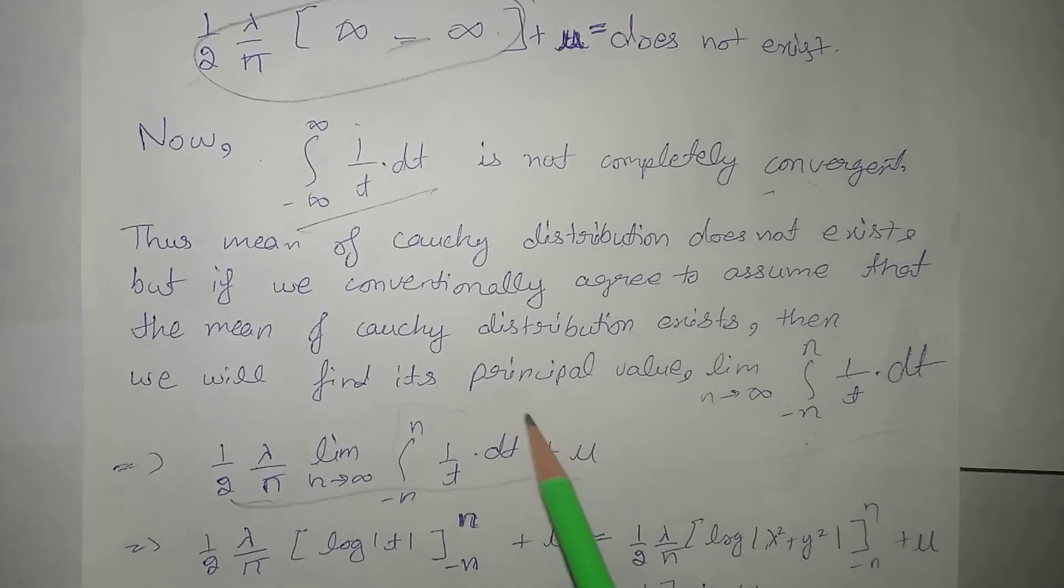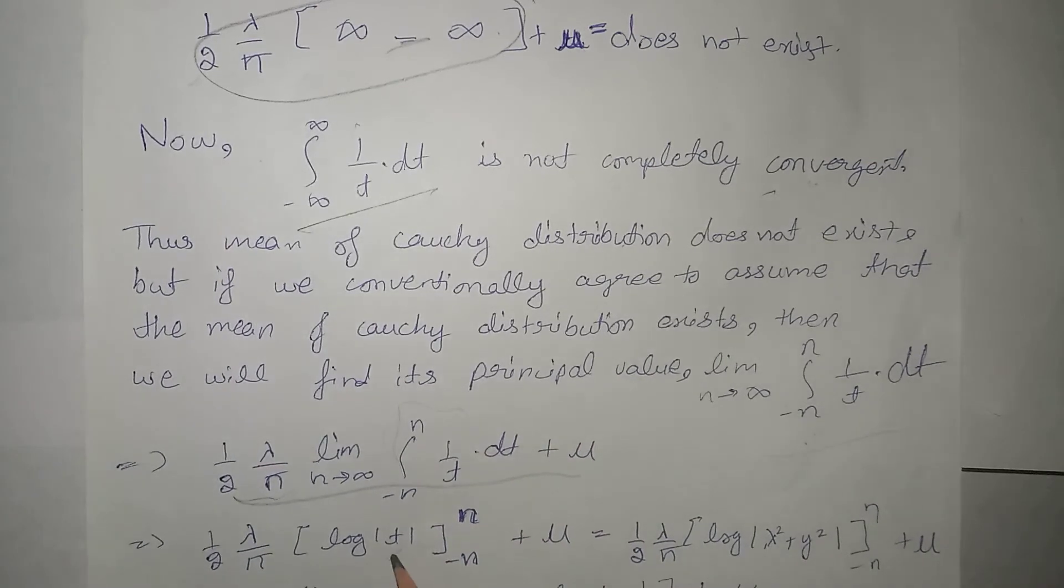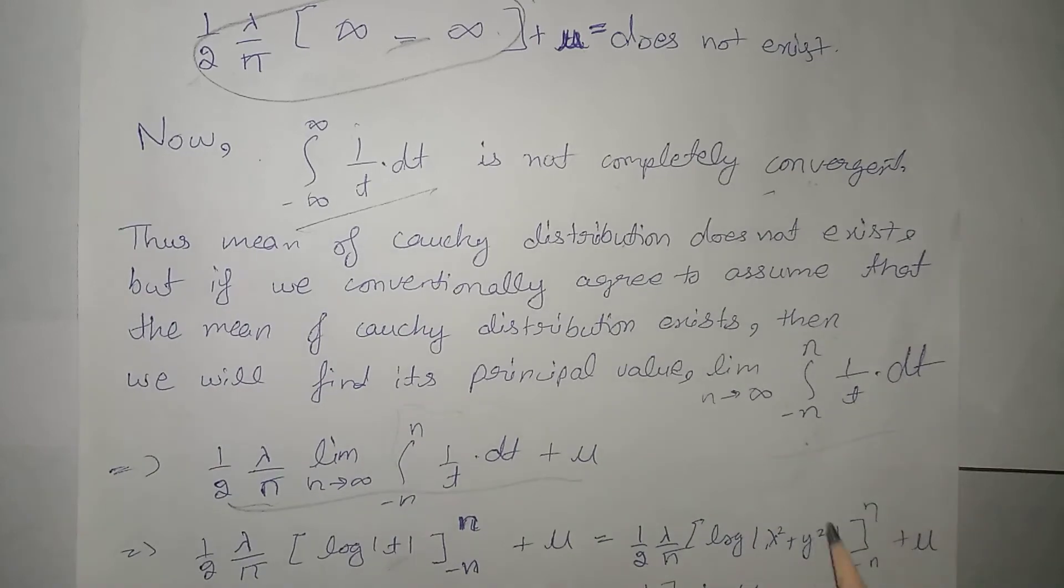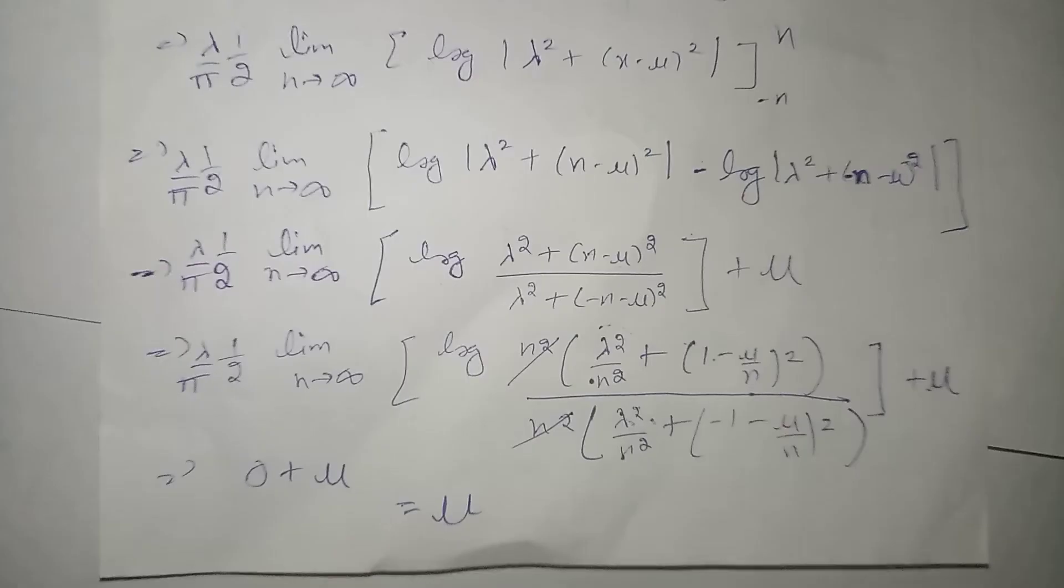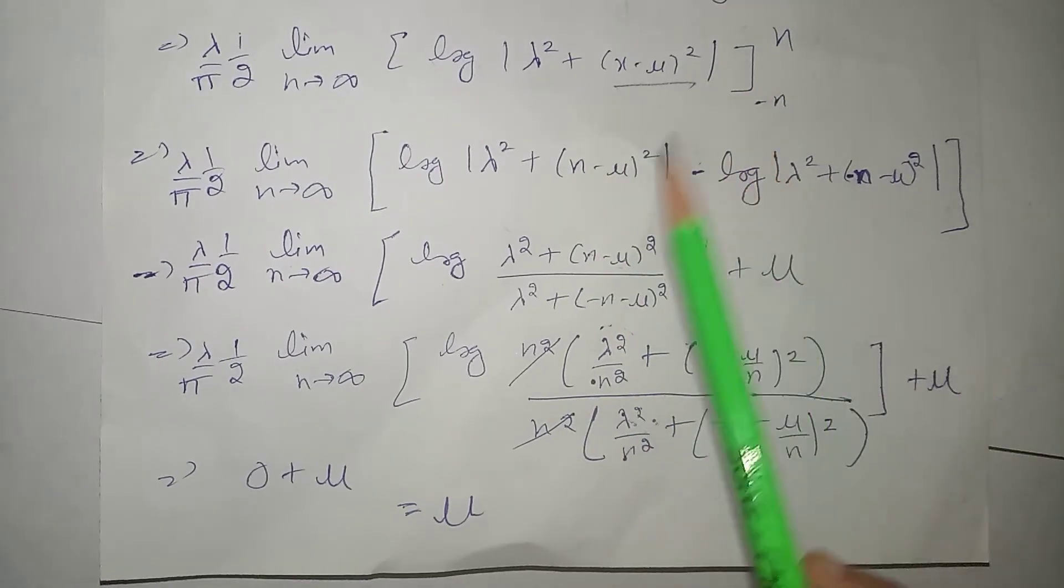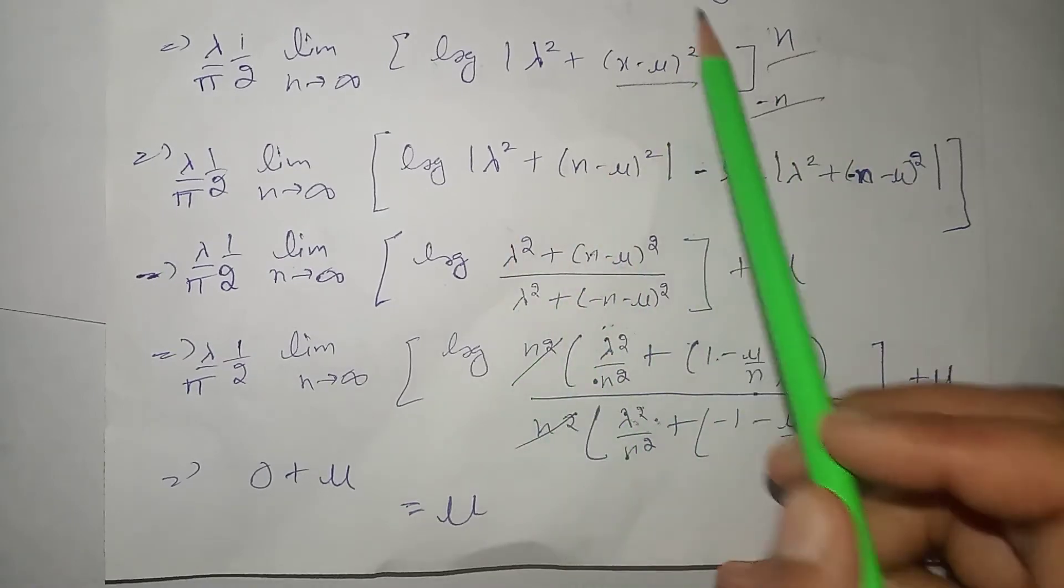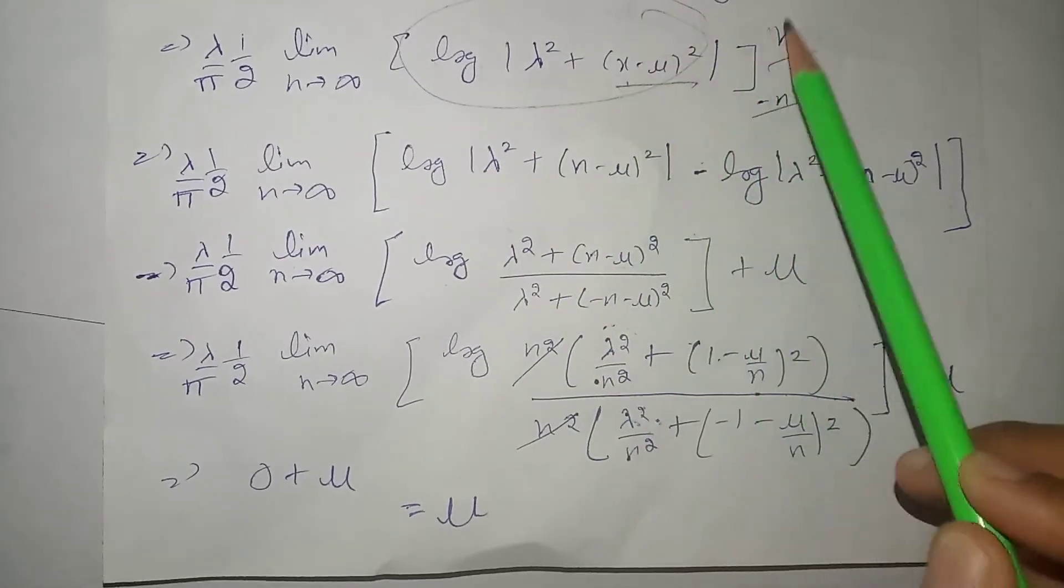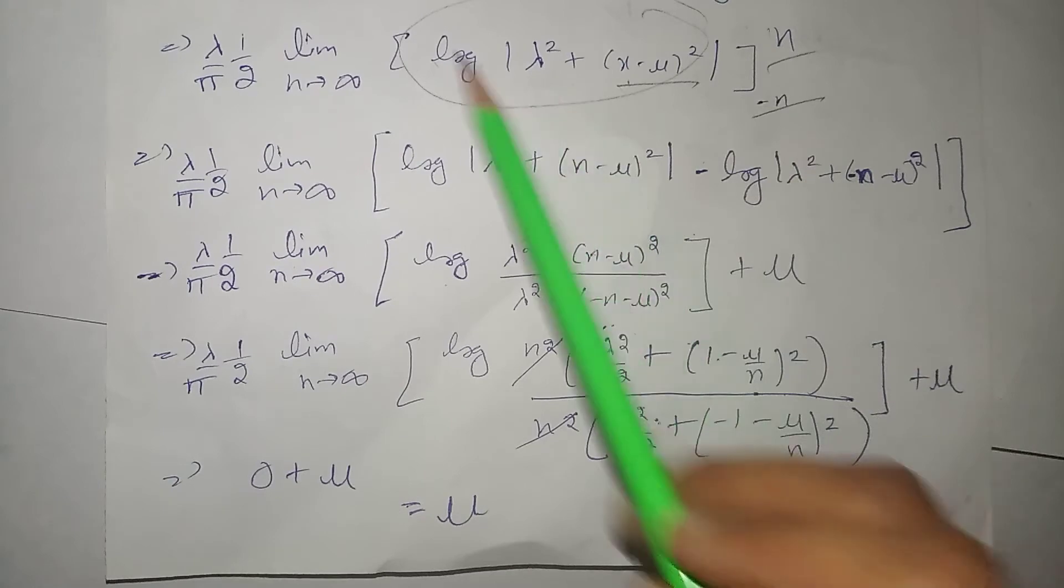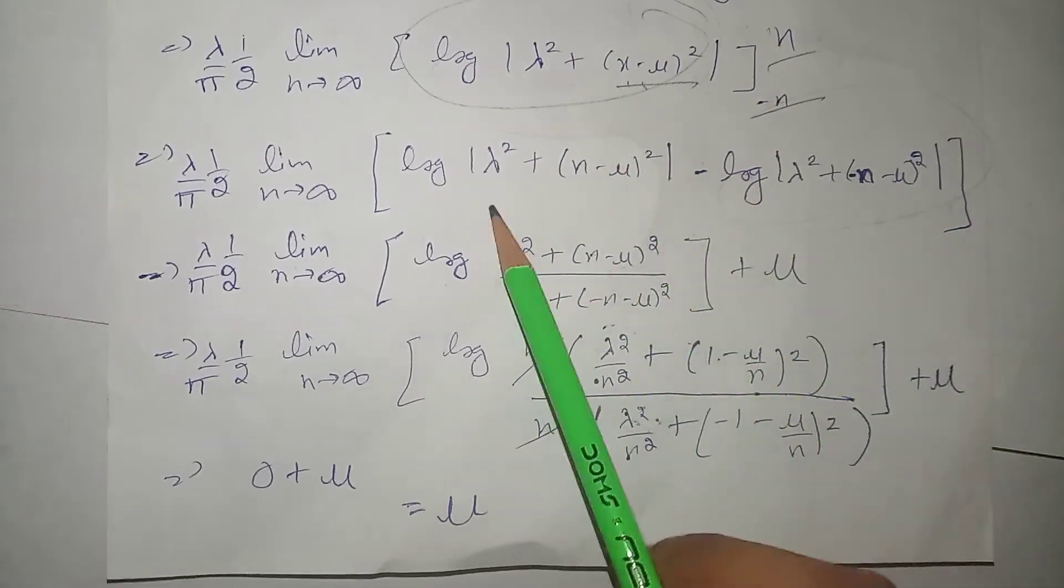Next, again, the same thing. That is, humne iski integration ki. Humara pas log modulus t hi aagaya. Next, t ki value, dekhiye. Humne piche kya put ki thi. Lambda square plus y square. Next, dekhiye. Humne y ki value kya put ki thi. X minus mu square. And next, humne in limits ko put kar diye. That is, ek baar hum is puri term mein x ki jaga par n put kar denge. And then, ek baar is puri term mein x ki jaga par minus n put kar denge. Humara pas e a jayega.